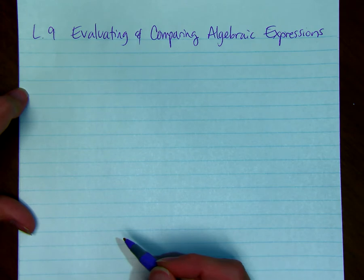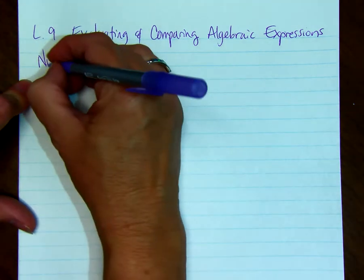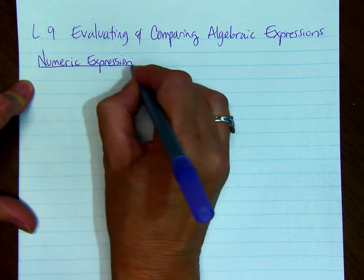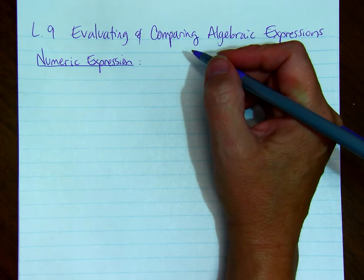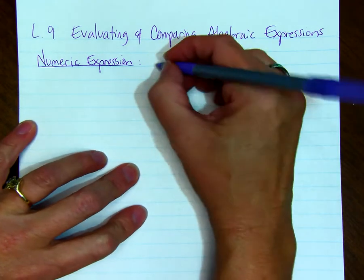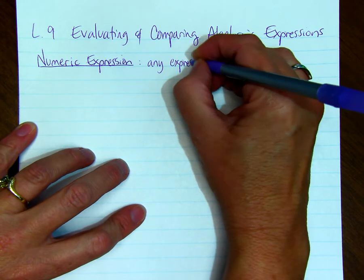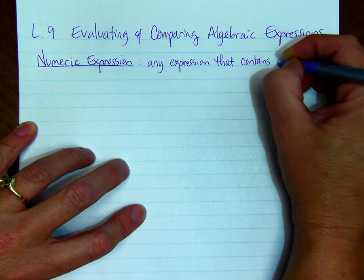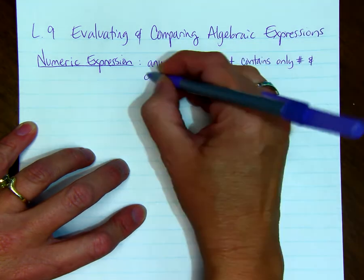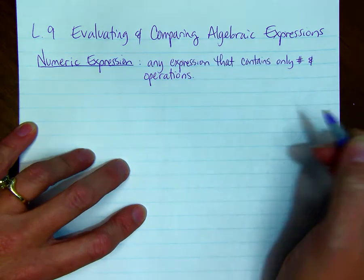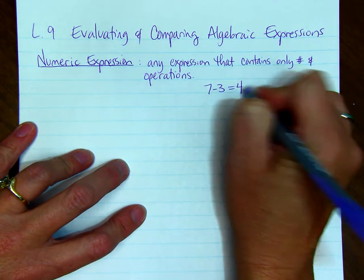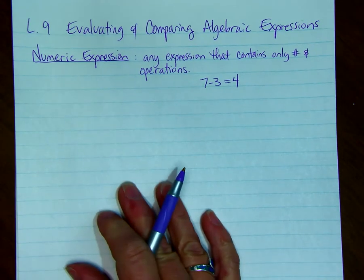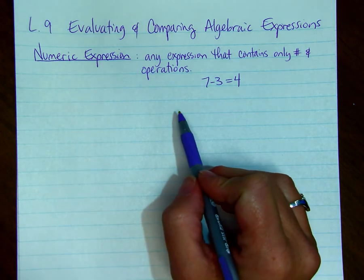We're going to go over different types of expressions. The first one is called a numeric expression. A numeric expression is just any expression that contains only numbers and operations. Here's an example of a numeric expression: 7 minus 3 equals 4. Notice that it only has numbers and it has operations, subtraction.